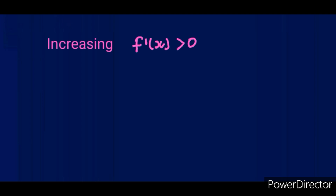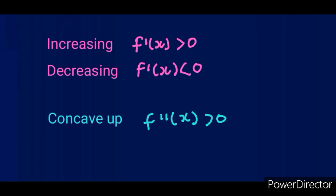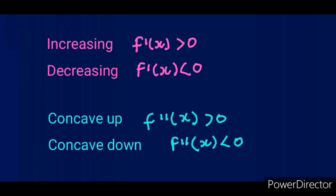Here are the key things to memorize: whenever the graph is increasing, the first derivative is positive; whenever the graph is decreasing, the first derivative is negative. For concavity: whenever the graph is concave up, the second derivative is positive; whenever the graph is concave down, the second derivative is negative. At the point of inflection, the second derivative is zero — the concavity is neither positive nor negative, neither concave up nor concave down.